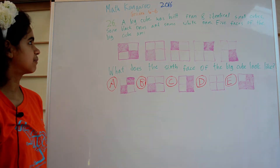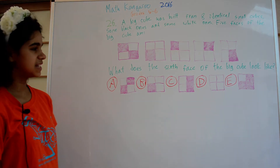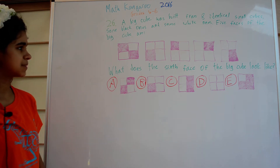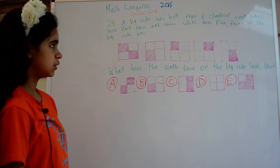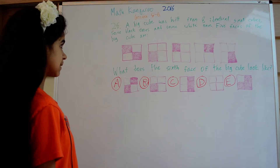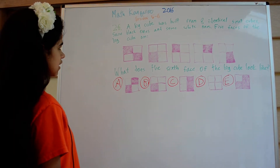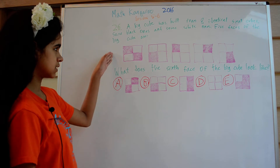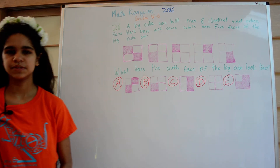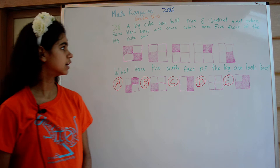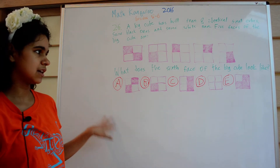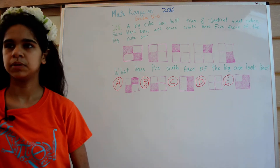Hi, today I'm going to show you how to solve problem 26 from the 2016 Math Kangaroo grades 5 to 6. Here's the problem. A big cube was built from 8 identical small cubes, some black ones and some white ones. Five faces of the big cube are shown — I'm using pink instead of black for this problem — and we want to know what the sixth face of the big cube looks like.